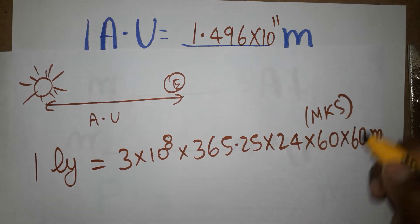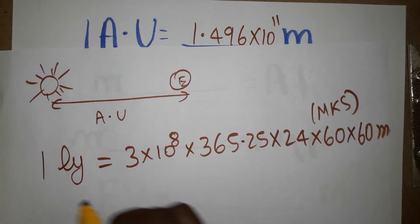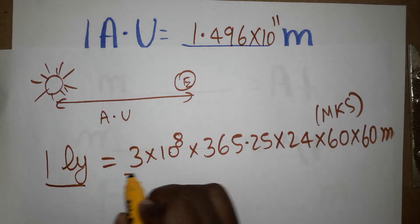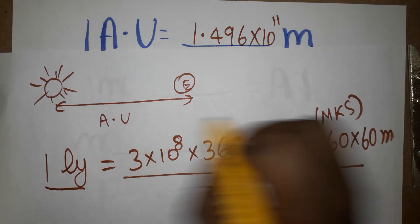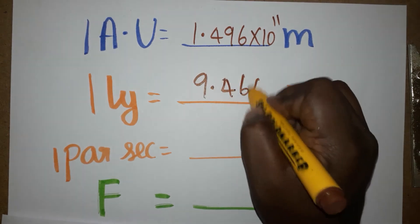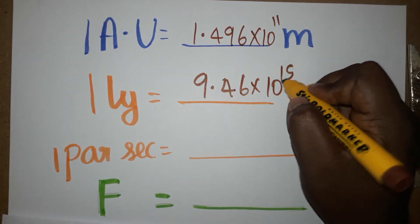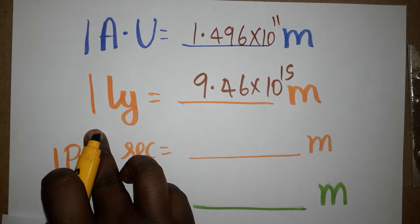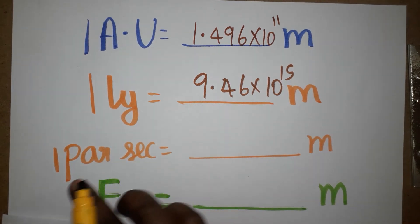We always have to use MKS system - meter, kilogram, second, which is very easy to calculate. So only light year is going to be this many meters. If you are doing this calculation you will get a very simple value: 9.46 into 10 power 15 meter. So one light year is light traveling in one year.